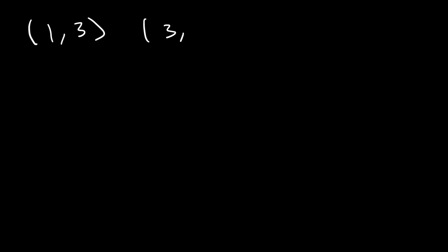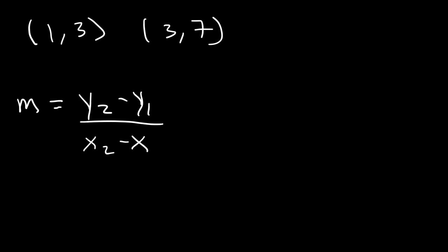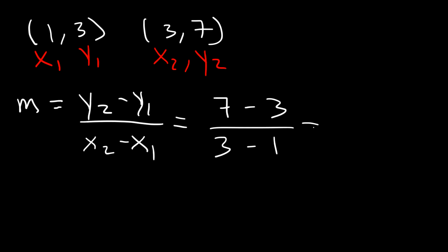Now let's talk about how to write a linear equation given two points — say (1, 3) and (3, 7). The first thing you need to do is find the slope. The formula is m = (y2 - y1) / (x2 - x1). So x1 = 1, y1 = 3, x2 = 3, y2 = 7. Plugging in: (7 - 3) / (3 - 1) = 4/2 = 2. So the slope is 2.